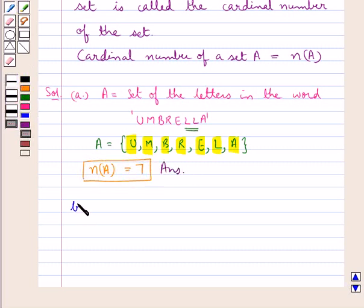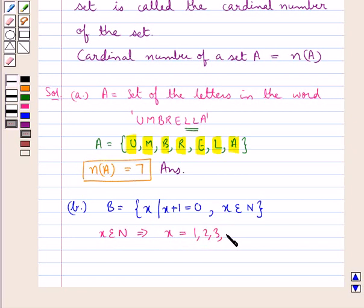For the second part, we have set B = {x | x+1=0, x∈N}, where N is the set of natural numbers. Since x∈N, x takes values 1, 2, 3, and so on.